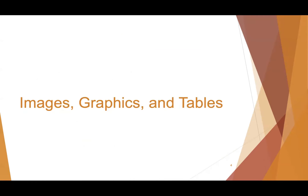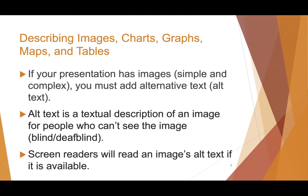Let's start with images, graphics, and tables. If your presentation has images — simple and complex — you need to add alternative or alt text. Alt text is the textual description of an image, and it's for people who can't see it, such as people who are blind or deafblind. Screen readers access the image's alt text and read it aloud, and that is how the image is accessible for them.